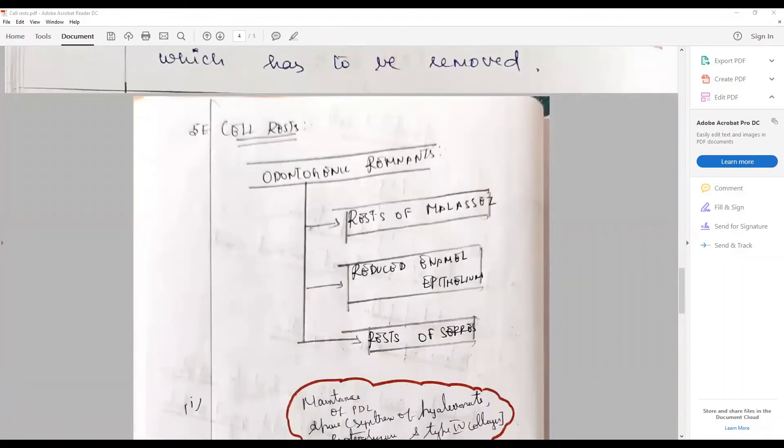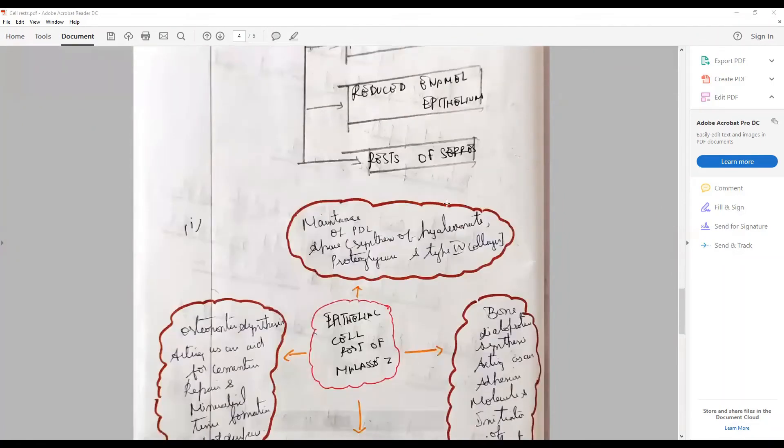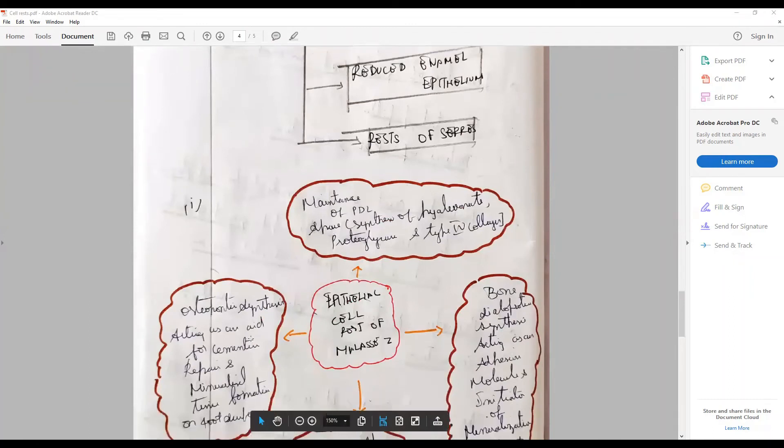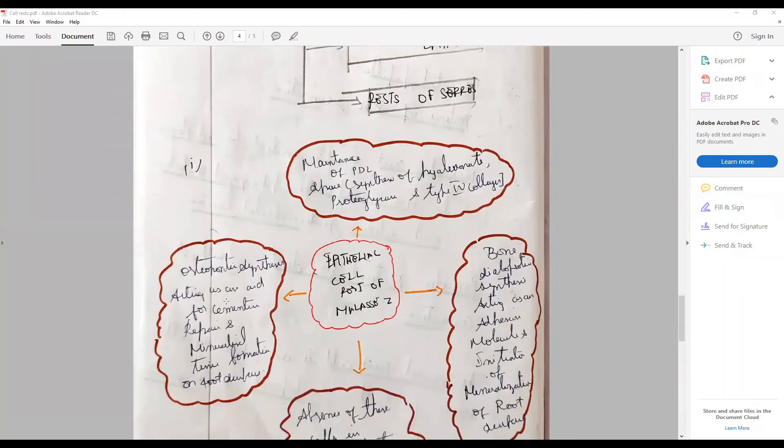This is another candidate's paper which has talked about the cell rest of Malassez from reduced enamel epithelium, the rest of Serres from the gingiva, beautifully deployed. How they contribute to osteopromotive contributions, its suspected role - not confirmed role - as referred to papers.